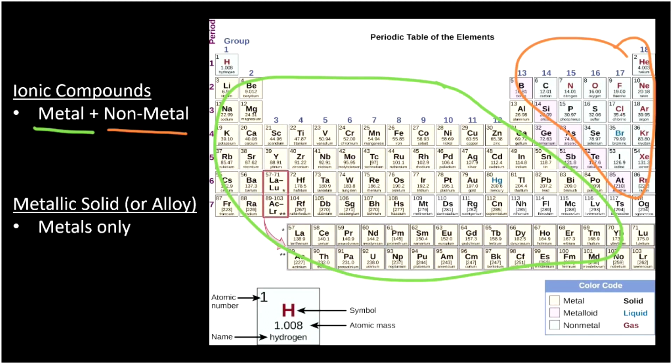If you put together two metals, we get just a metallic solid or an alloy. We won't talk about the properties of these compounds in detail in this class, but I thought it would be nice for you to know that that makes something as well.